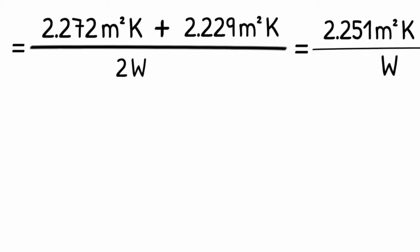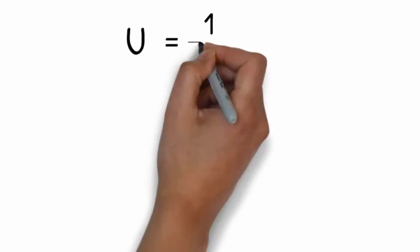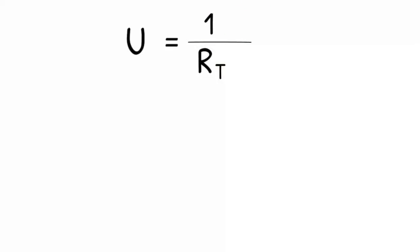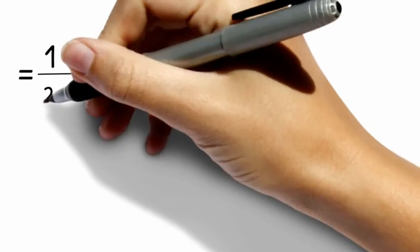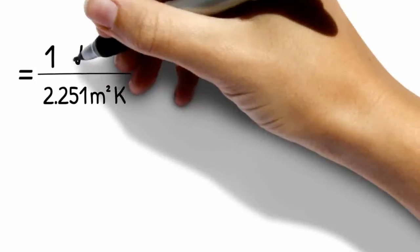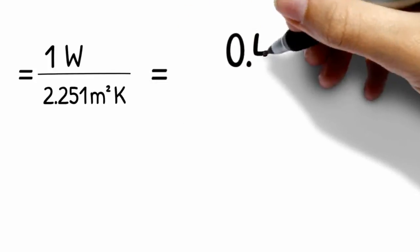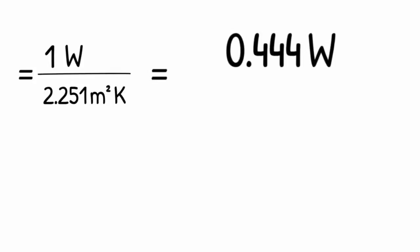The U-value is still the inverse of the total resistance and in our case the inverse of 2.251 square meter times kelvin and the watt then goes on top of the bar. This gives us 0.444 watt per square meter and kelvin which is our result.